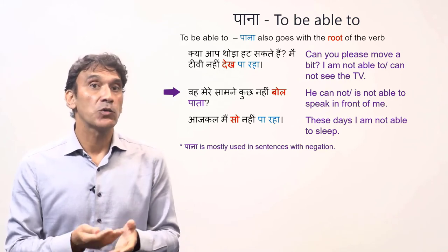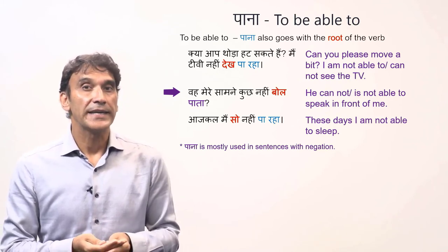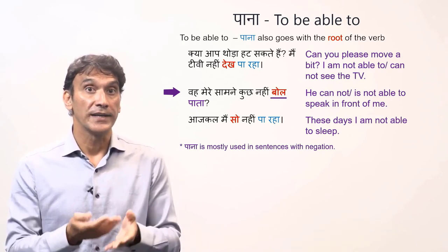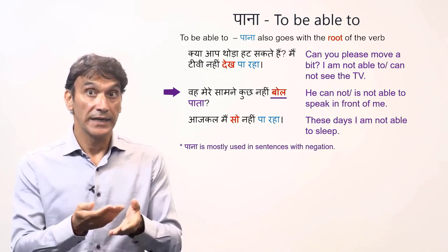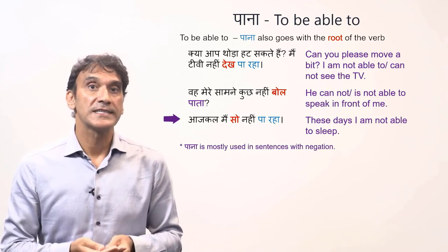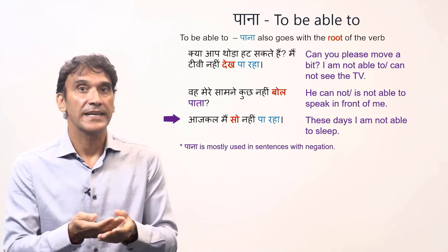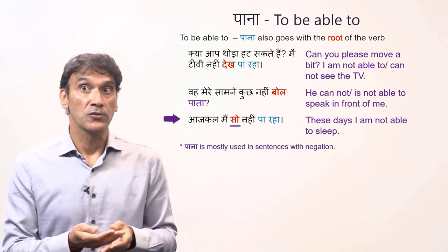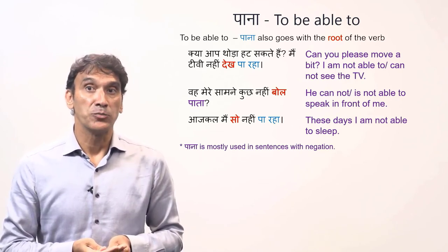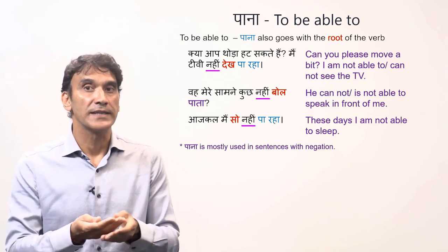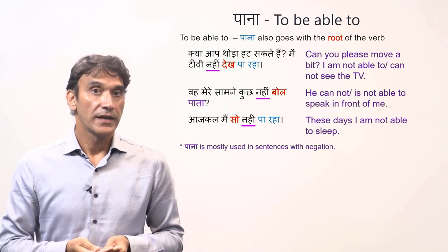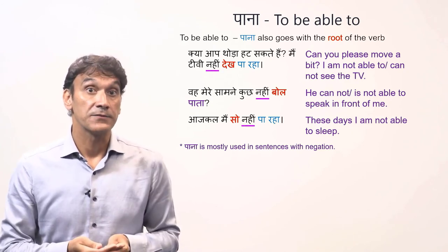Second example: 'woh mere samane kuch nahi bol pa tha' — he is not able to speak in front of me. The verb bolna has its root form only — bol. Bol pa tha — able to speak. Last example: 'aaj kal main so nahi pa raha' — these days I am not able to sleep. The verb sona is in its root form. Also keep in mind that paana, meaning to be able to, is mostly used in negative sentences with negation.